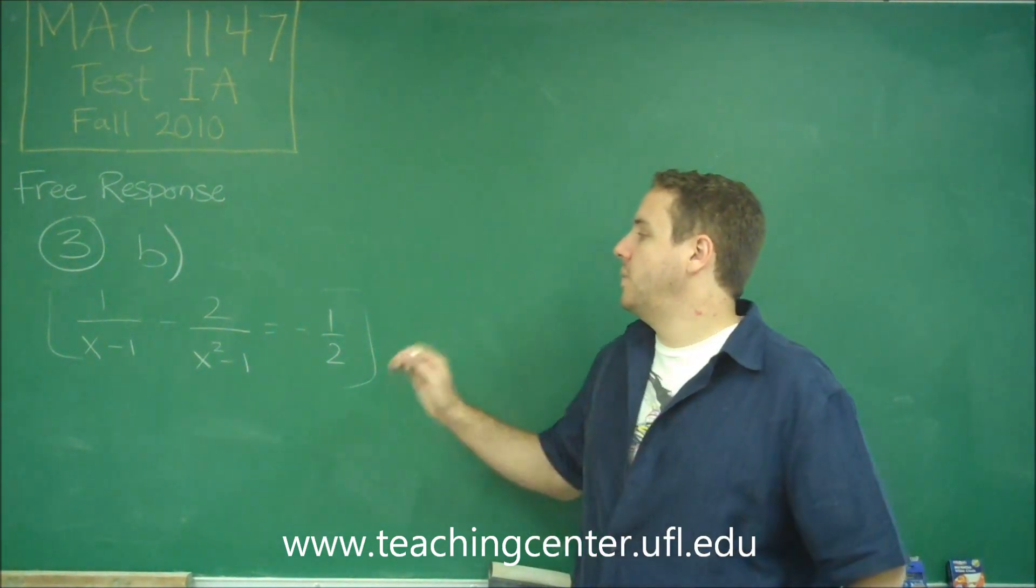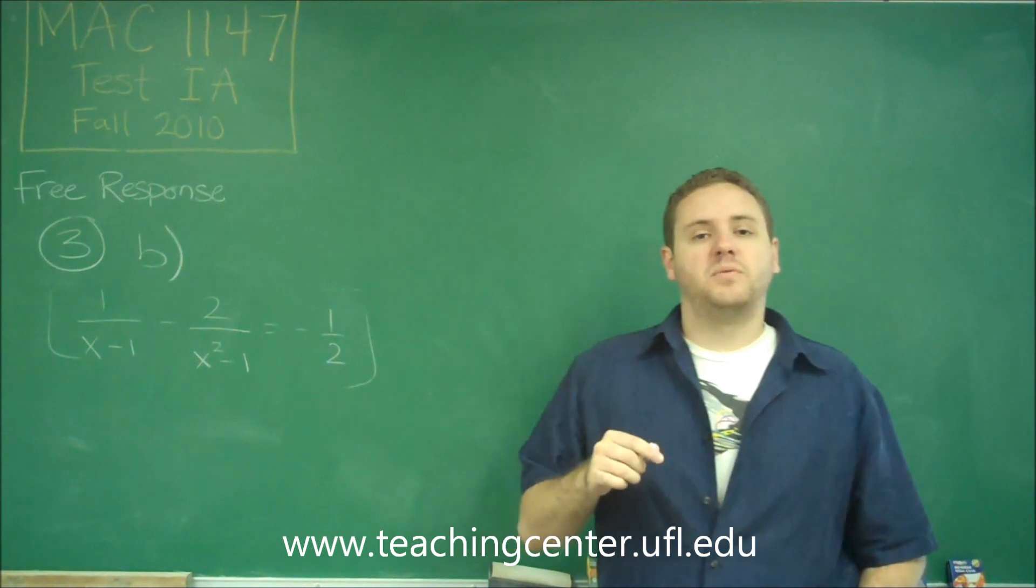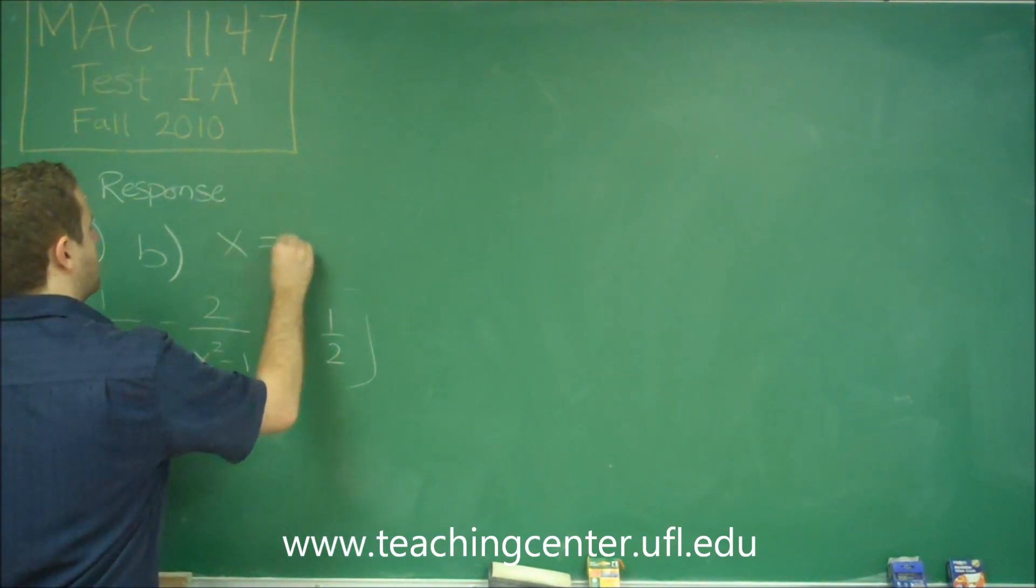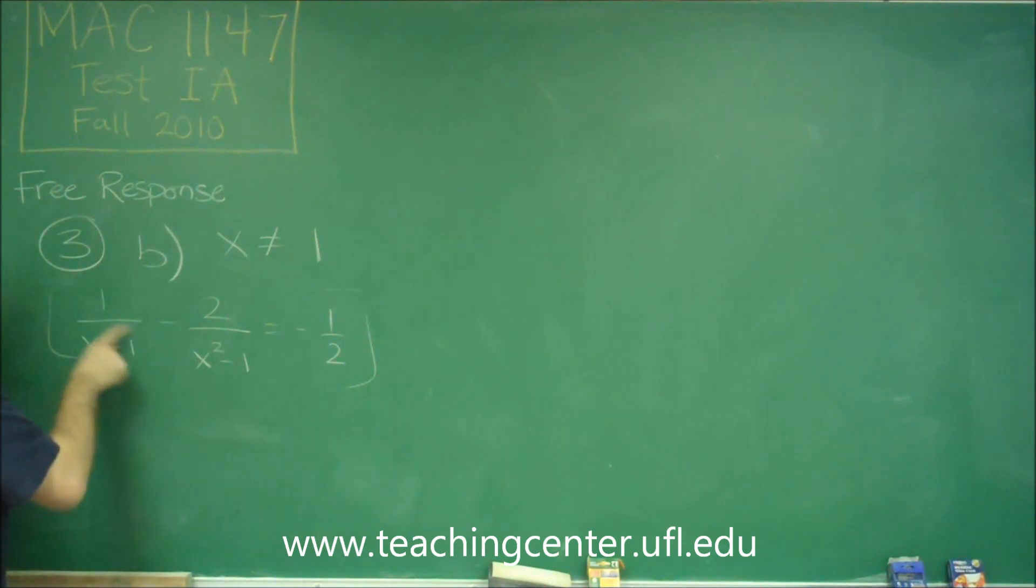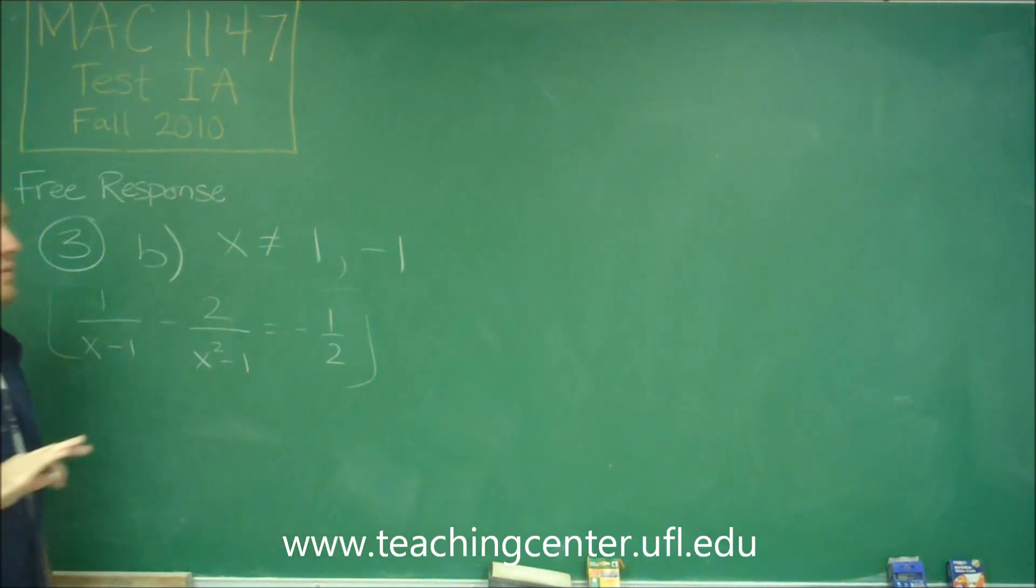What we need to do here is try to get rid of the denominators, but what we first need to take into account is what numbers we can't have before we even start simplifying this problem. Obviously, we can't have x equaling 1, because that would make this denominator 0. It would also make this denominator 0. But for this fraction, negative 1 also wouldn't work. So we can't have those two numbers right off the bat.